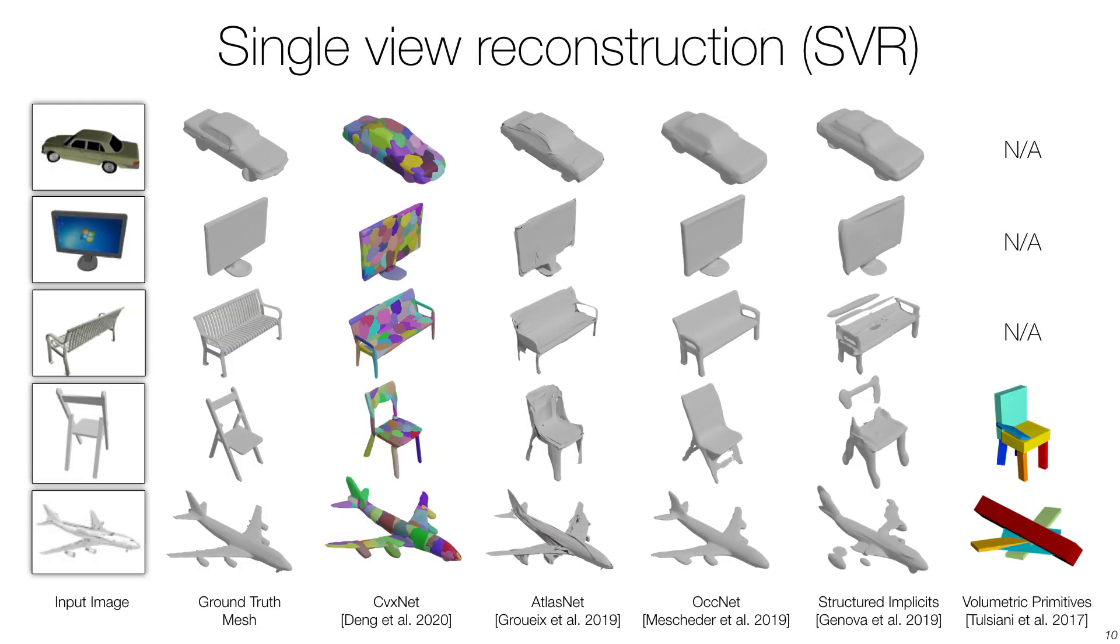Here, we also show results for single-view reconstruction, that is, generating a 3D model from a single color image. Our performance is on par with methods that only perform surface reconstruction. However, note our method also performs shape decomposition on top of reconstruction.